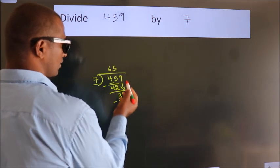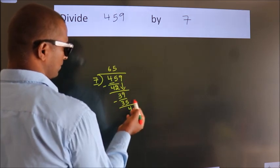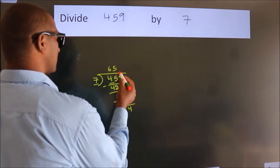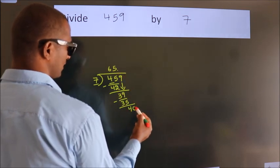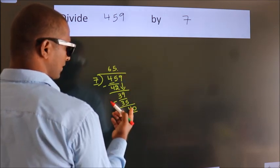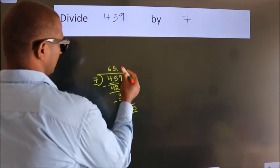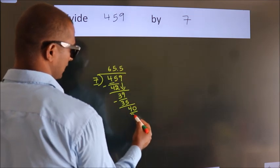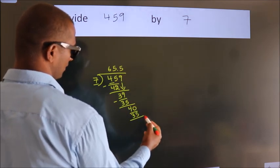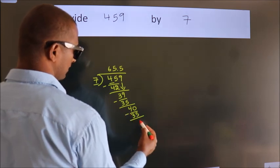After this, no more numbers to bring down. So what we do is put a dot and take 0, giving us 40. A number close to 40 in the 7 table is 7 times 5, which is 35. Now we subtract and get 5.